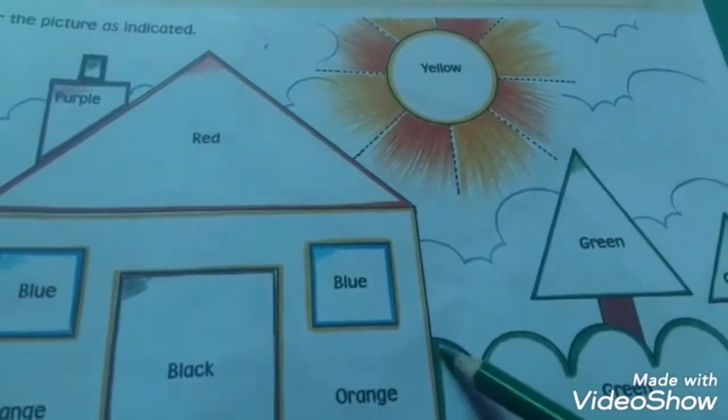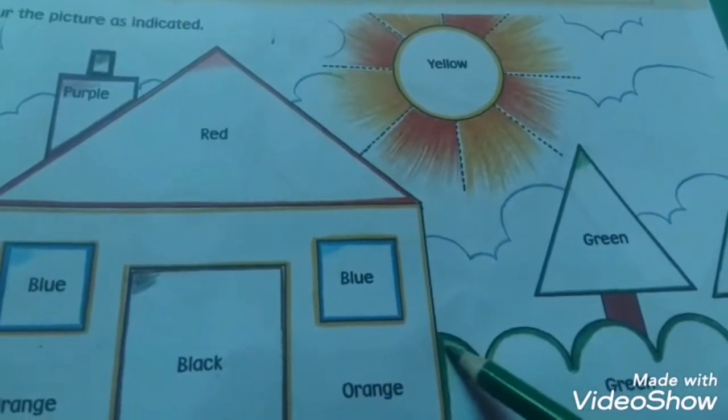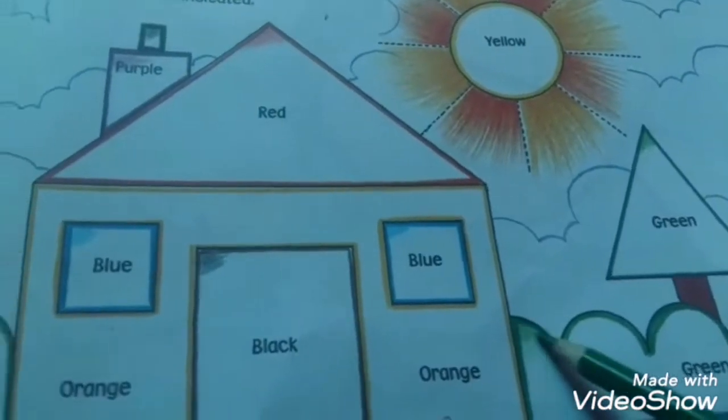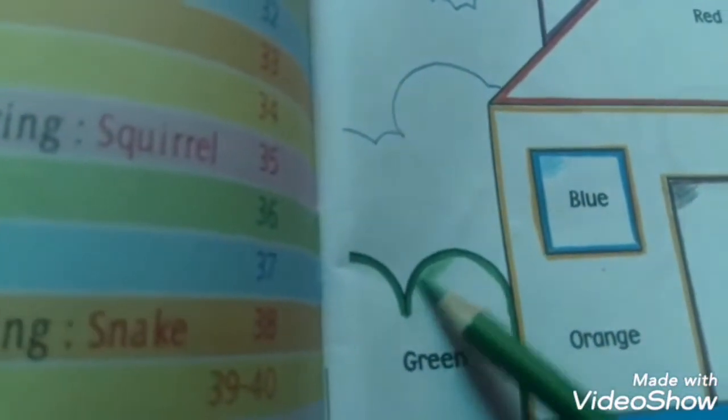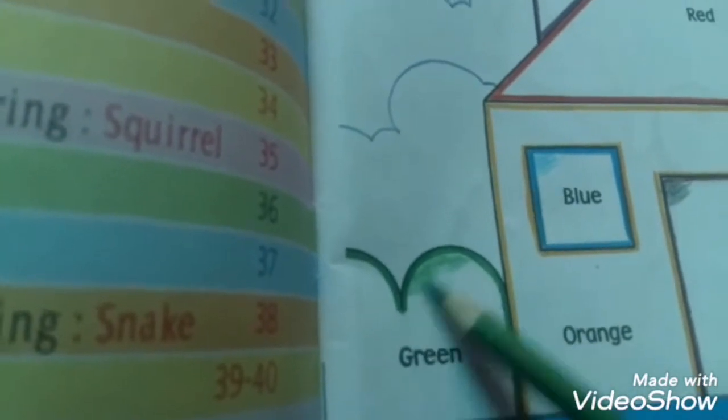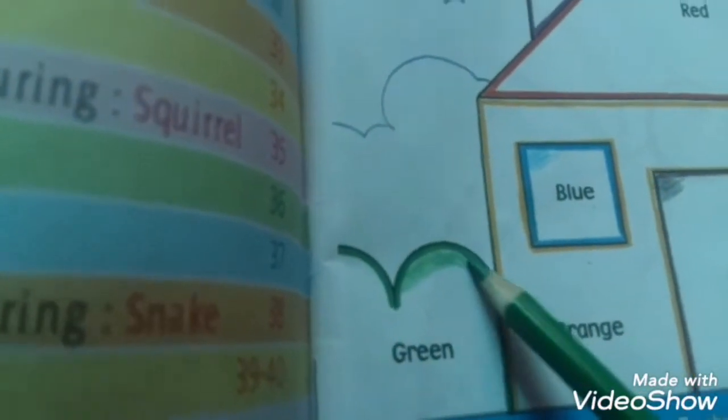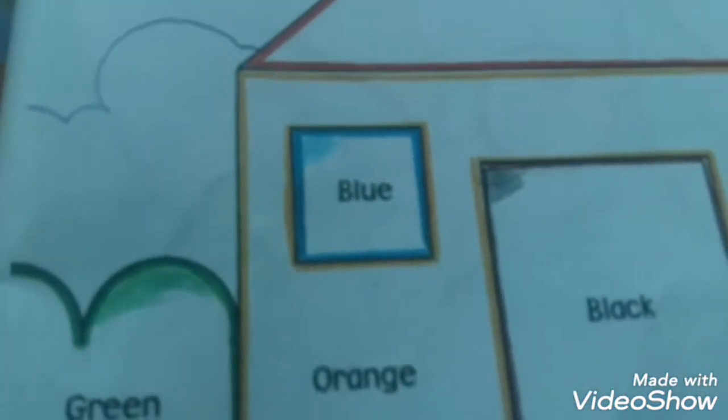And in grass also, you use green color. Other side, left side, you also use green color. Now student, according to my color code, you complete page three. Open page number four.